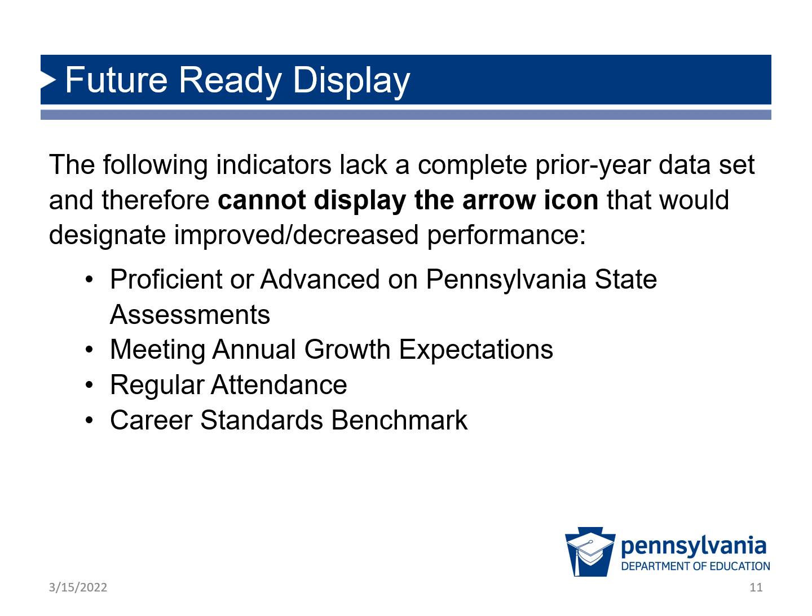Last year's extended testing window, federal and state testing flexibilities through waivers, and the irregular historically low test participation rates have impacted the availability and comparability of certain data elements. As a result, users may notice some modifications to the Future Ready Index display and functionality. Some of these changes were necessitated by the lack of complete datasets. Others have been made in an attempt to assist viewers in accurately analyzing the data. One of these changes is the arrow-shaped icon that compares a school's increased or decreased performance in the same indicator to the previous school year. The indicators listed on the slide do not have full sets of previous year data for a comparison. Therefore, the arrow-shaped icon cannot be displayed.